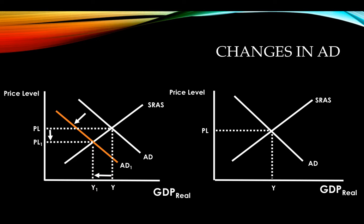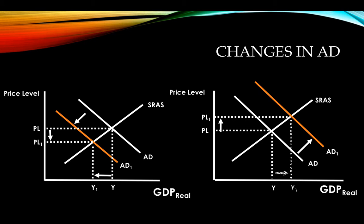Now let's look at what happens when aggregate demand increases. The aggregate demand curve shifts to the right. There is our new aggregate demand curve labeled AD1. We have a new equilibrium price level with an arrow showing an upward movement, and our new equilibrium output has increased. With output increasing, our unemployment level is decreasing.